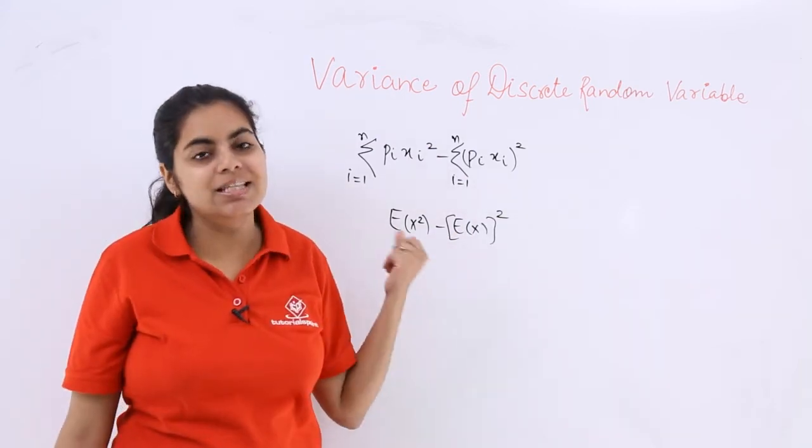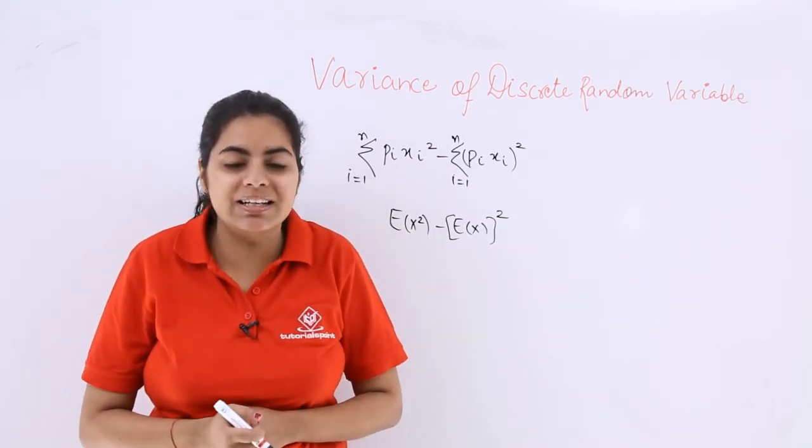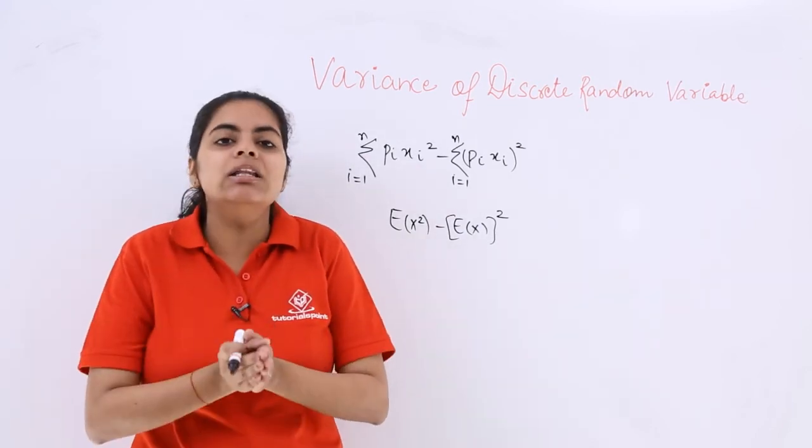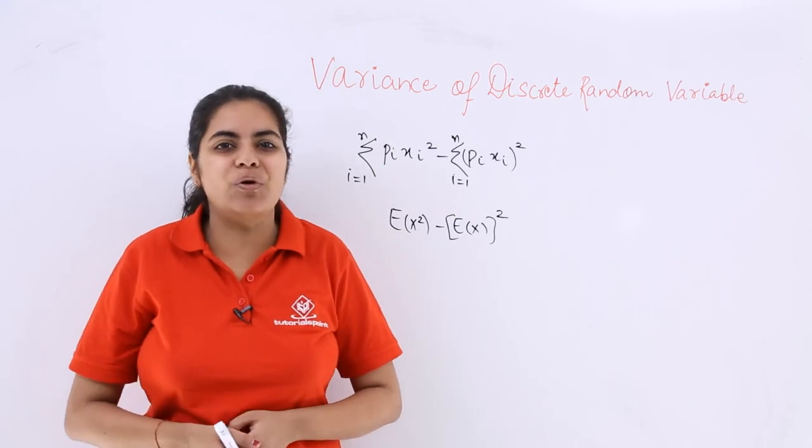That is known as the variance of a discrete random variable. This will be very beneficial in solving the questions that follow this video.